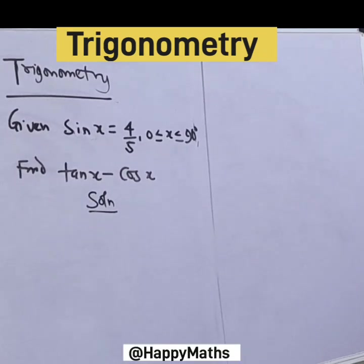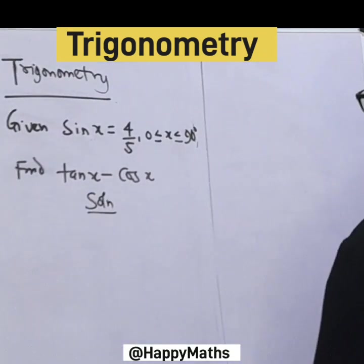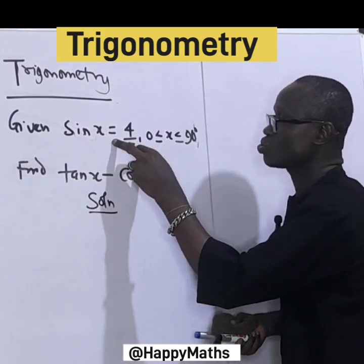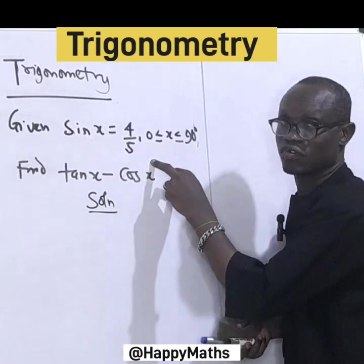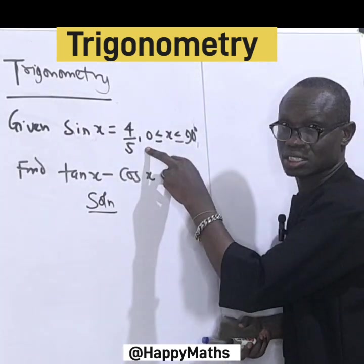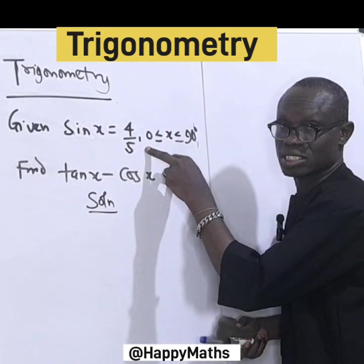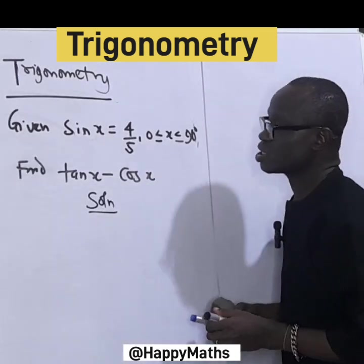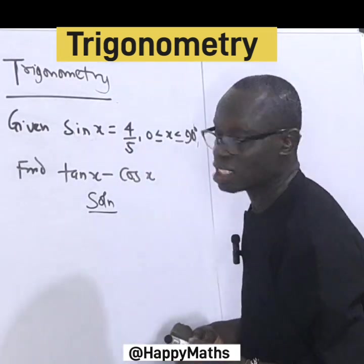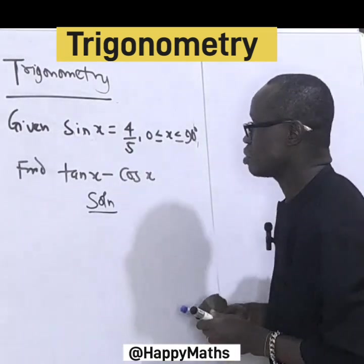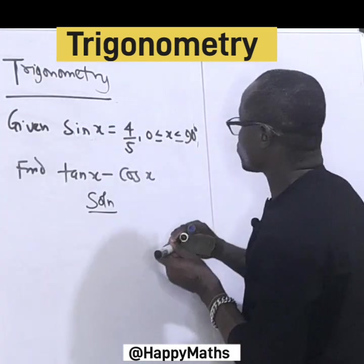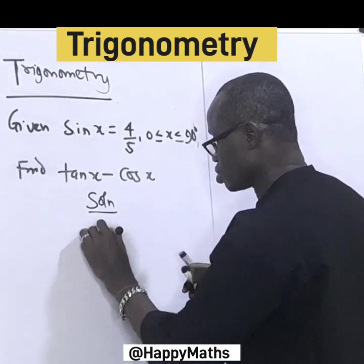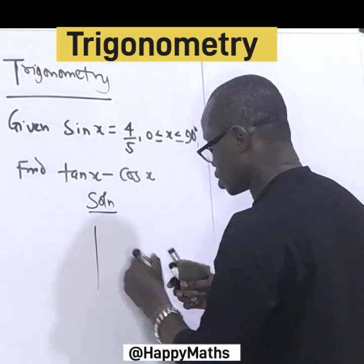Given sin(s) = 4/5, with 0° less than or equal to s less than or equal to 90°, find 5sin(s) minus cos(s). Since this is an acute angle, let's draw a right angle triangle.